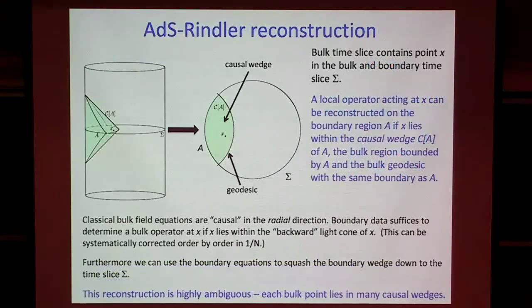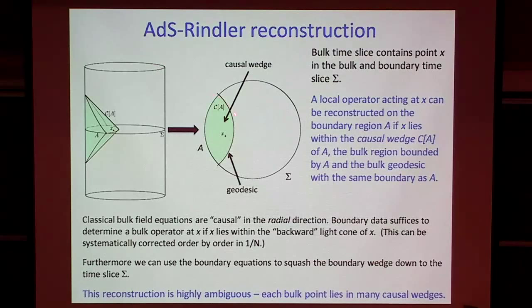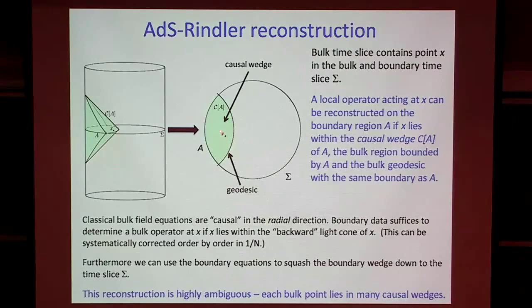I'm going to remind you of some properties of the ADS-CFT correspondence, mention how they're realized in these codes, and then explain how the codes are constructed. Lenny spoke of precursors earlier, and there's standard lore about how local operators in the bulk can be reconstructed on the boundary. If I consider some connected region on the boundary labeled A, I can consider a geodesic in the bulk which connects together the boundary points of A. There's a region in the bulk between A and that geodesic called the causal wedge of A, and the standard constructions tell us that if there's a local operator in the bulk acting at a point X in the causal wedge of A, then that operator can be reconstructed on the boundary with support only on A.